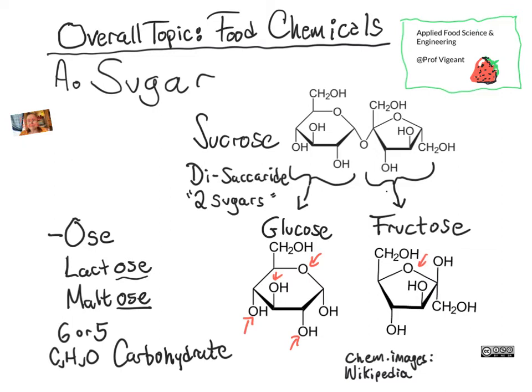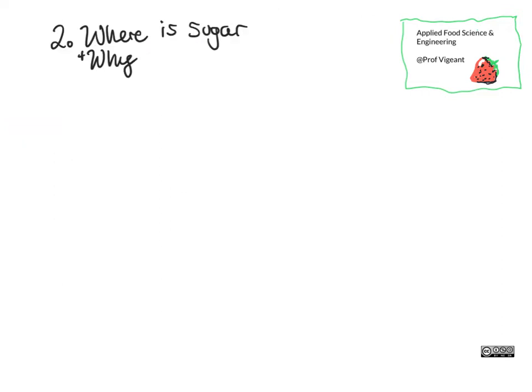Things like glucose, fructose, and sucrose tend to be referred to as simple carbohydrates, even though when you look at them right now they can be a little intimidating. These form the building blocks out of which more complex carbohydrates are made. By and large, in terms of food, sugars are coming much more from plant sources than from animal sources.